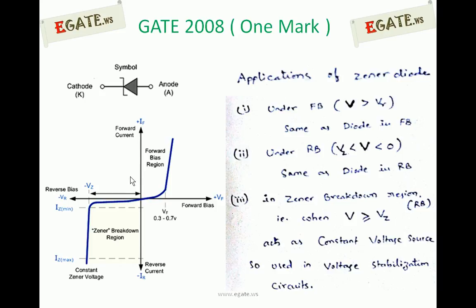Whenever the voltage across the Zener diode is negative, there are two different regions. One is the reverse bias region based on the magnitude of the reverse voltage. Under reverse bias — where V is negative and Vz is also negative — if the voltage across the Zener diode is greater than Vz and less than 0, the Zener diode is under reverse bias and acts like an ordinary diode in reverse bias, meaning it acts as an open circuit with current ideally equal to zero.